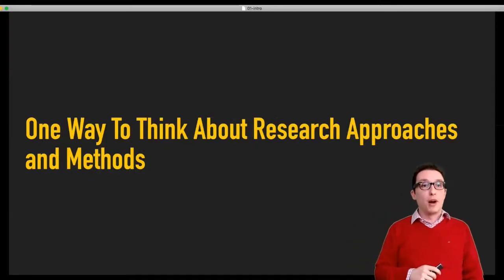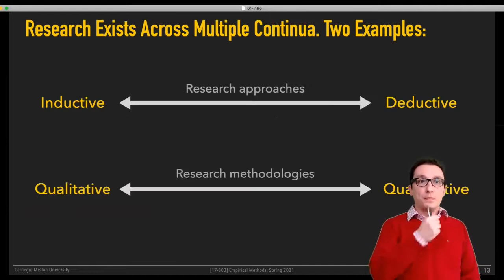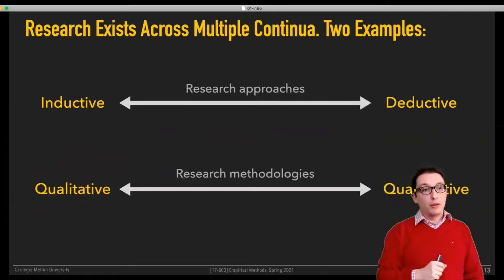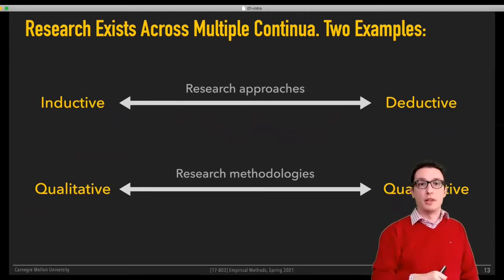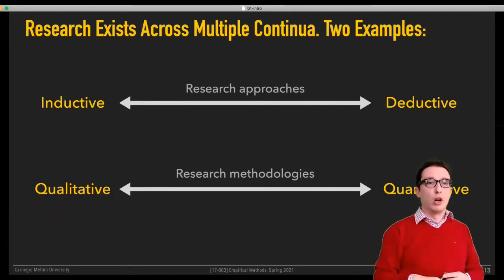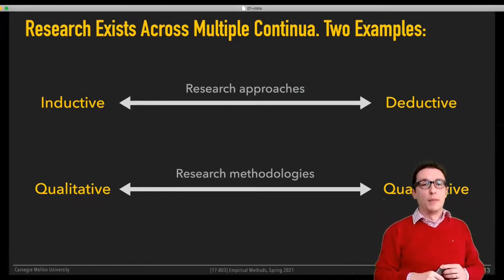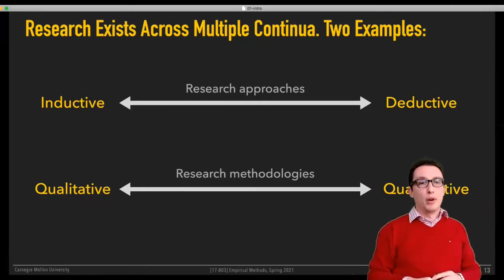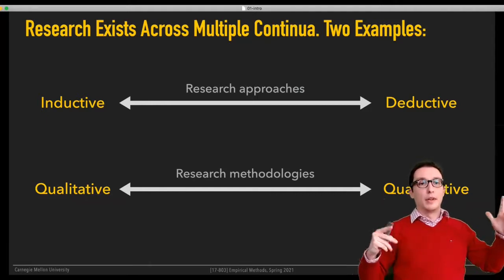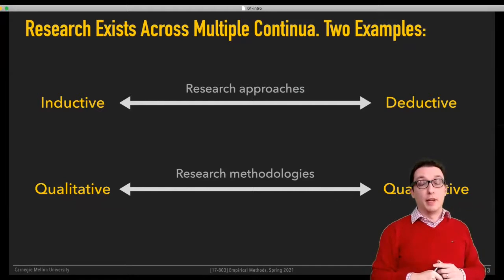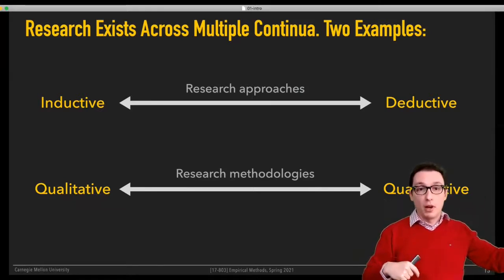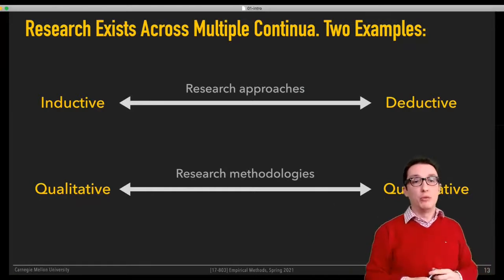Here's one way to think about research approaches and methods. When we talk about research methods or methodologies, the most familiar term is probably the distinction between qualitative methods and quantitative methods. This is a continuum—it's important to note this. It's not a binary thing; a method is not either qualitative or quantitative. It's a continuum—it could be anything in between—but these are sort of the extremes for simplicity purposes.